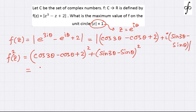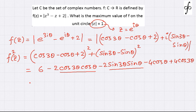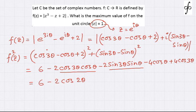On simplification, this gives us 6 minus 2 cos 3θ cos θ minus 2 sine 3θ sine θ minus 4 cos θ plus 4 cos 3θ. Now we can see that cos 3θ cos θ and sine 3θ sin θ can be clubbed using the compound angle formula to give us cos 2θ, since this is cos a cos b plus sin a sin b which equals cos(a − b). So we get minus 2 cos 2θ minus 4 cos 3θ.